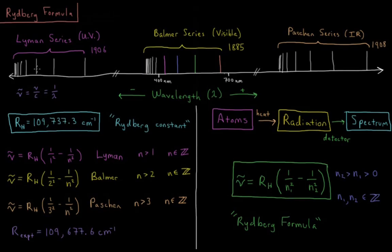Similarly for the Paschen series, you can fit a similar formula: constant times 1 over 3 squared, minus 1 over n squared, where n is greater than 3, so n equals 4, 5, 6, 7, etc. The interesting thing is that all three of these fit to the same constant.